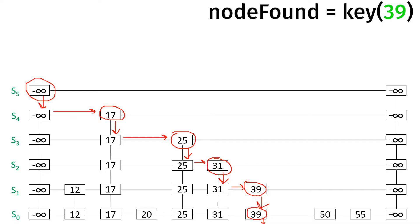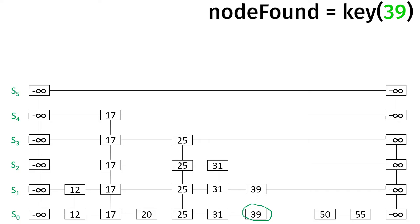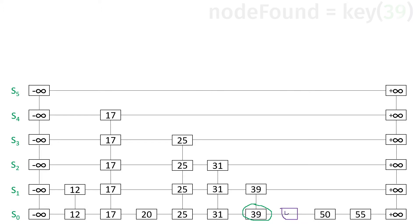So we found the node containing 39 from searching. Now we just do the insertion part. We create a new node for 42 and manipulate references — that's the toughest part of insertion and deletion. 39's next reference was referencing 50, but now it references 42. 50's previous reference was referencing 39, but now it references 42. Skip list is a probabilistic data structure, and we're about to find out why.